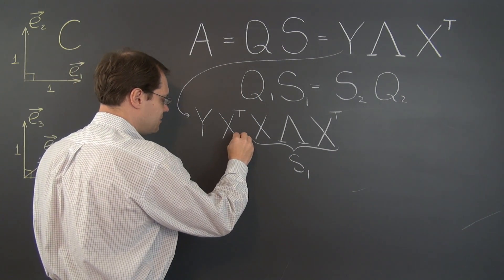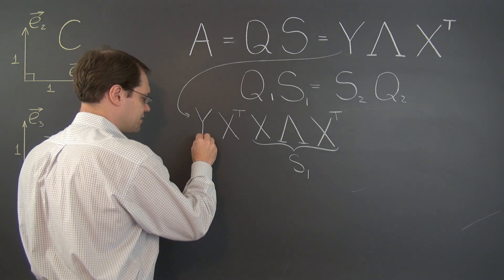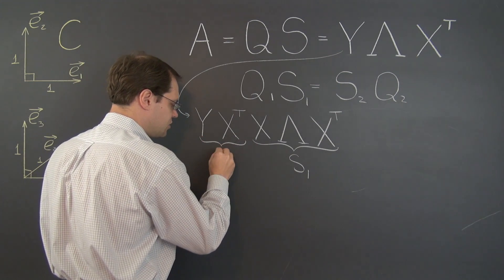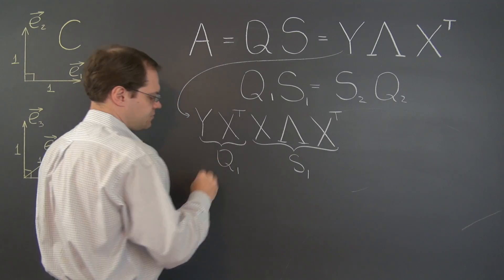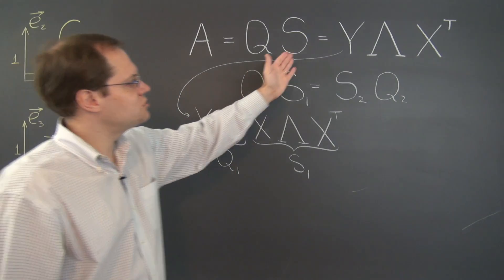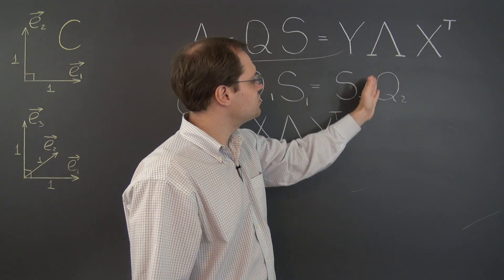And this orthogonal matrix, product of two orthogonal matrices, is Q1. Now we're going to do the same thing, but go from this to this.